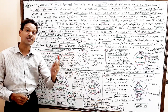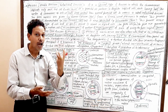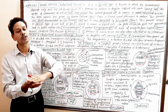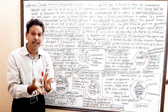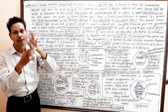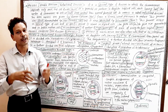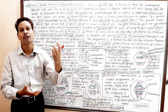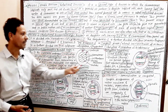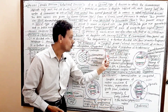Leptotene is also known as the bouquet stage, because the ends of all chromosomes aggregate at one particular point in the nucleus — like a bouquet of flowers. So it is also called the bouquet stage.